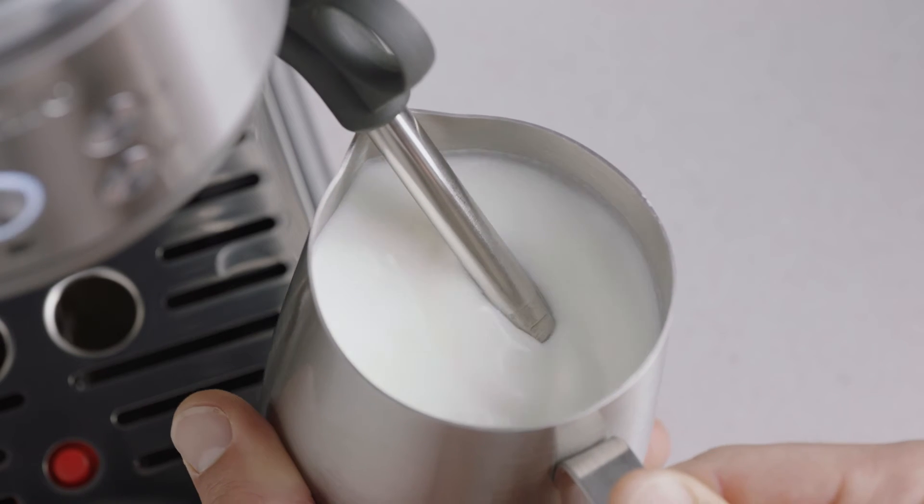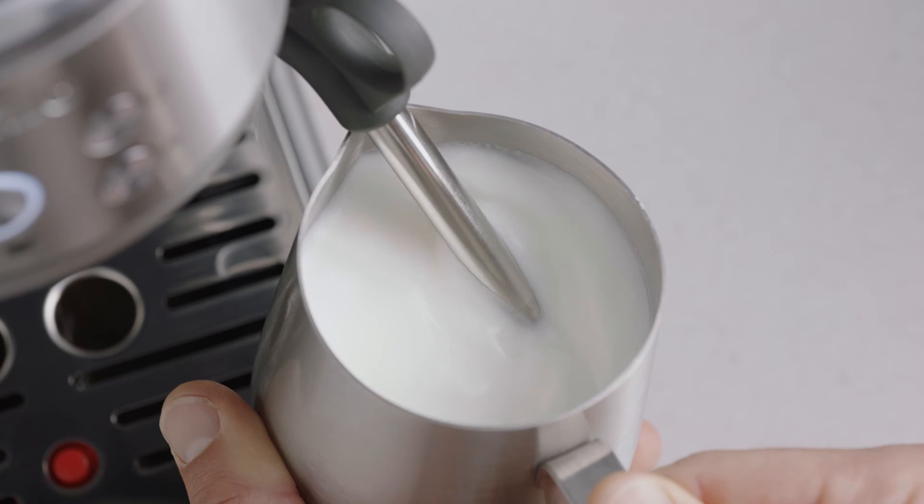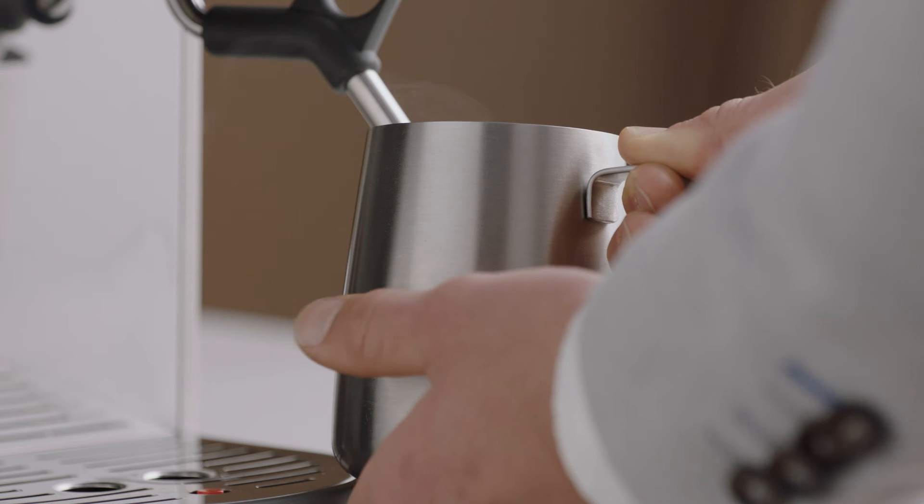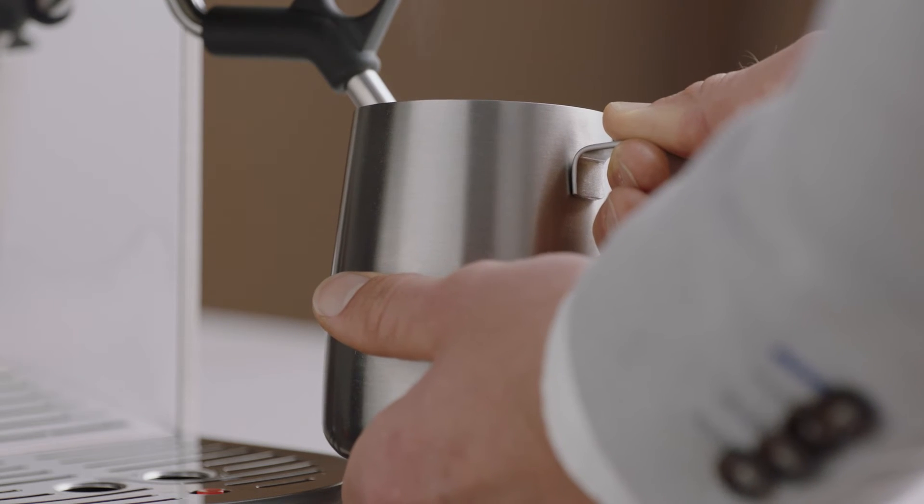Texture the milk until sufficient volume is obtained. The milk is at the correct temperature, 60 to 65 degrees Celsius, when the jug is hot to touch.